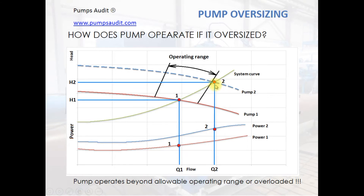This means that pump 2 will operate with lower efficiency and lower reliability. If we look at the power curve, we will discover that the electric motor can be overloaded. What can cause motor failure, despite the fact that it is more powerful than the motor of pump number one?